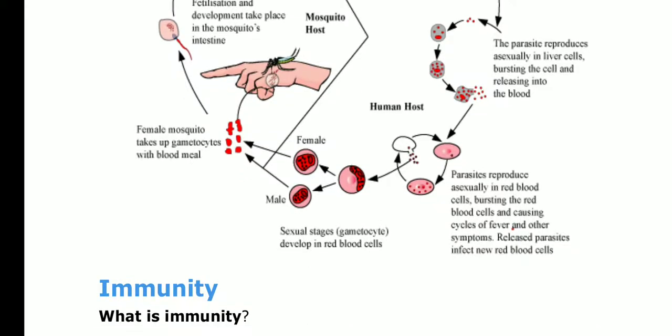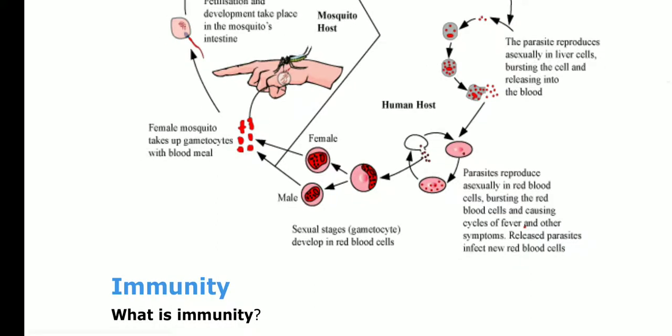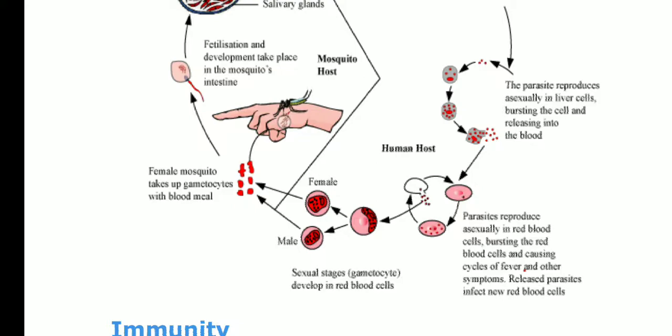The parasite also reproduces asexually in the RBCs, bursting them and causing cycles of fever and other symptoms. Released parasites infect new red blood cells. Inside the RBCs, some parasites change into gametocytes — the sexual stage comprising male (micro-gametes) and female (mega-gametes) gametes — which are then taken up by the female mosquito during a blood meal.